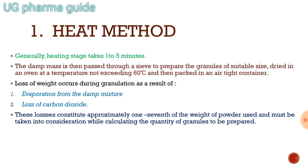Loss of weight occurs during granulation as a result of evaporation from the damp mixture and loss of carbon dioxide. These losses constitute approximately one-seventh of the weight of powder used and must be taken into consideration while calculating the quantity of granules to be prepared.